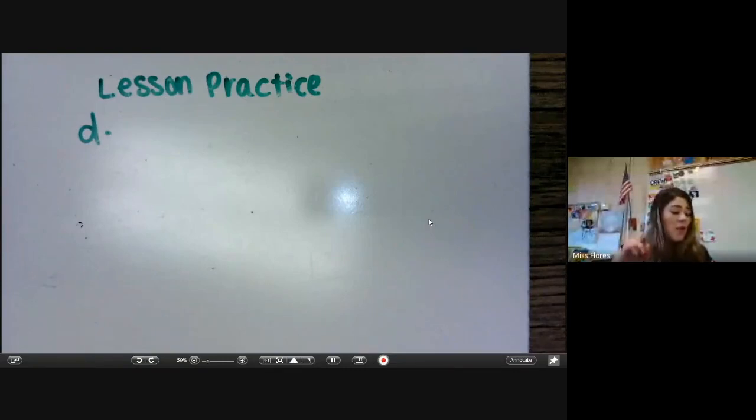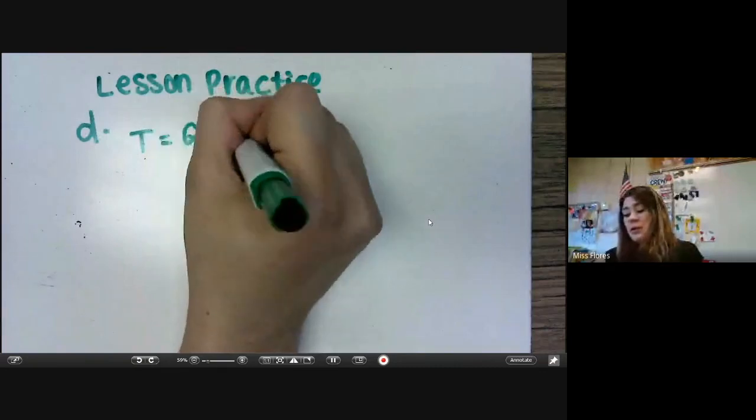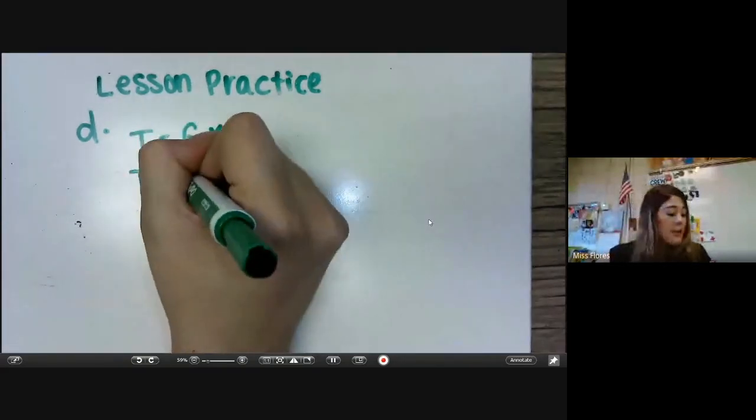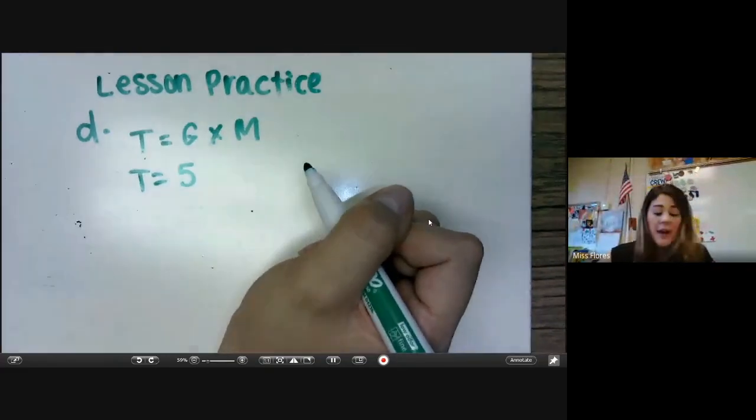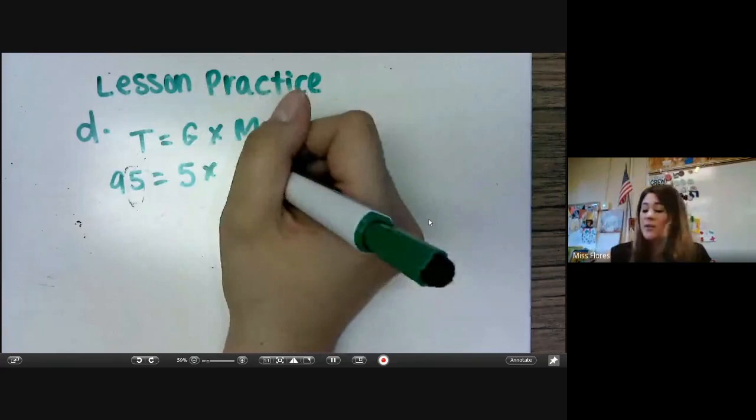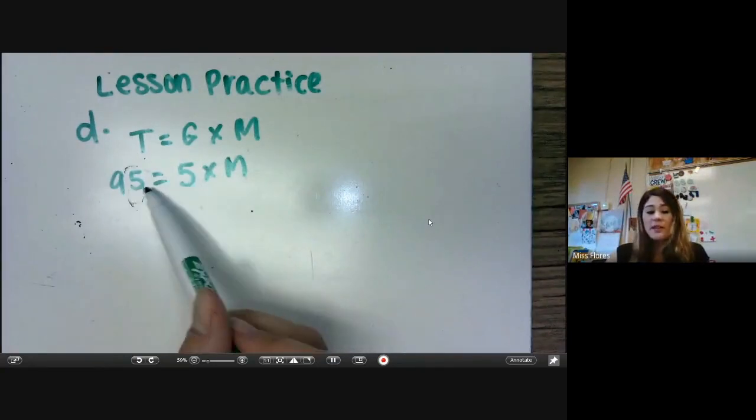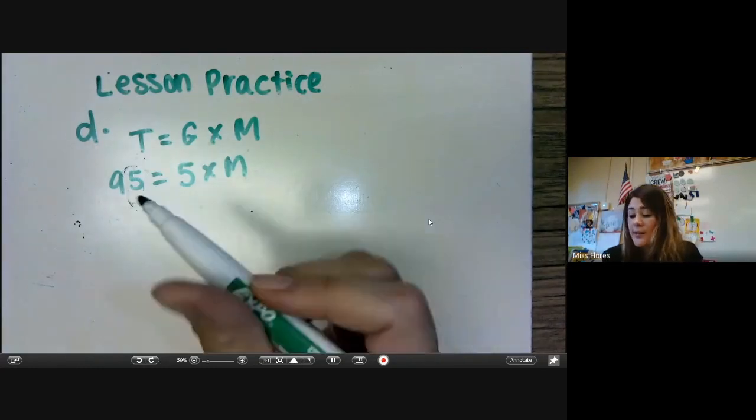Lesson practice D. A car can be driven 95 miles on five gallons of gas. How far can it be driven on one gallon of gas? So it's basically wanting you to come up with an equation. So we know the total equals gallons times miles. And since they give us the gallons of five gallons, and we know that they drove 95 miles total, we need to figure out how many miles they get for five gallons specifically. So that means in order to find this, in order to find M, we need to do the inverse operation. So we need to do the opposite of multiplication, which is divide.